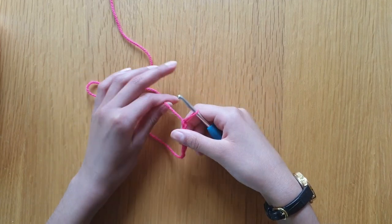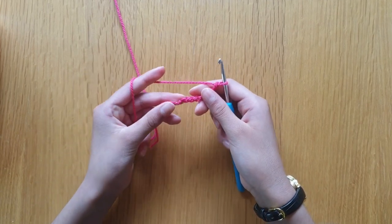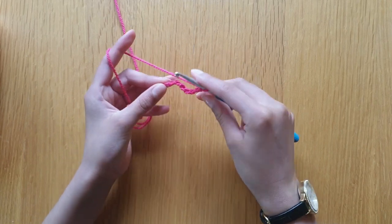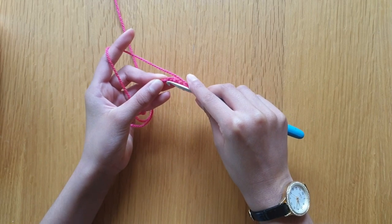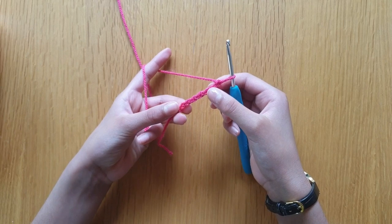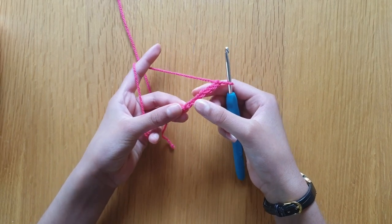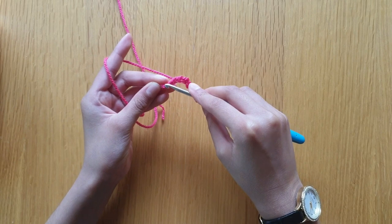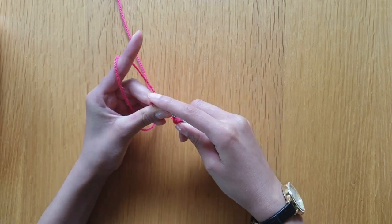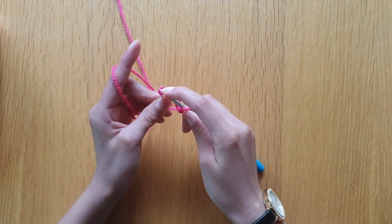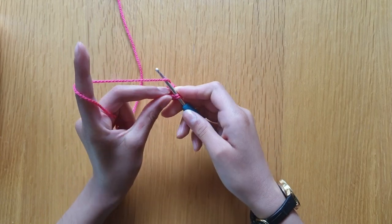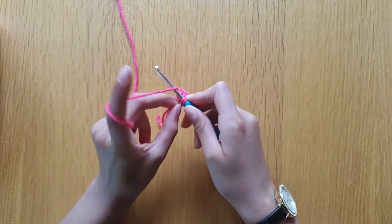Now we're going to do a slip stitch. We insert into the first stitch, which is this one. If you don't know which one you started with, you can just count down. One, two, three, four, five, six, seven, eight. My first stitch is a little tight, so it might be hard to get in there, but if I just tug on it a bit, there, I'm in it.